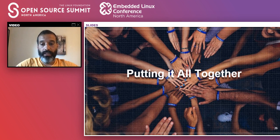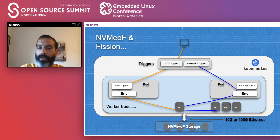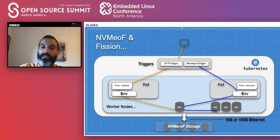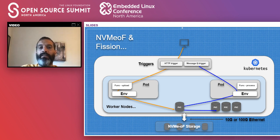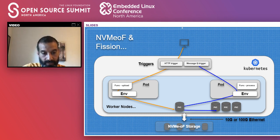Our specific use case proposal: assume a photo or media upload website that also needs to process media. One function on the left side of the diagram receives media triggered by an HTTP request. Once received, media is stored on persistent volumes. Depending on processing needs, another trigger can fire another function or application to process immediately, or processing can happen later when enough data has accumulated.